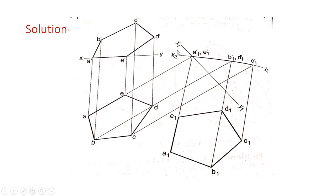Now we will draw a reference line x1y1 perpendicular to AE at some suitable distance. The projection of top view, that is auxiliary front view, on x1y1. Now measure respective distances from its front view with the help of a compass and cut it from the x1y1.